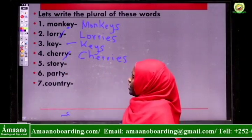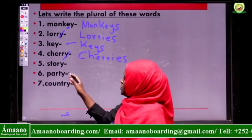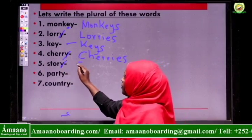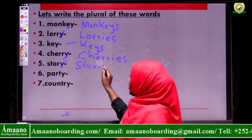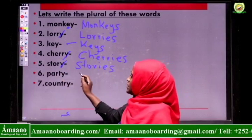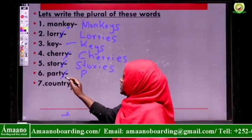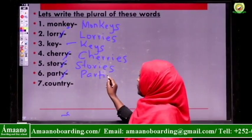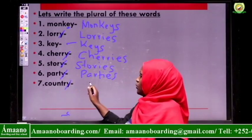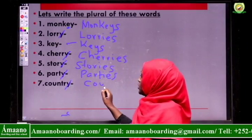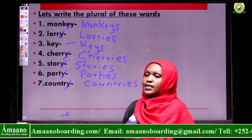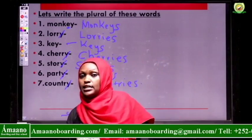Story — the word story is ending with letter Y. What do we do? Remove letter Y, then replace it with I-E-S. So story becomes stories. Party — cut letter Y, it becomes parties. Then we have country — do away with letter Y, then replace it with I-E-S, so country becomes countries.